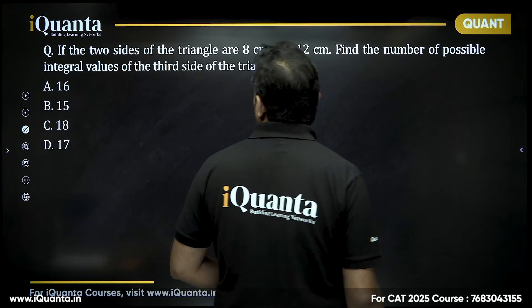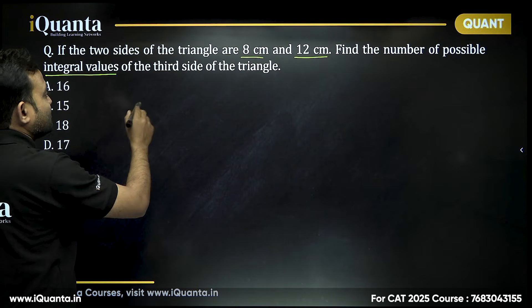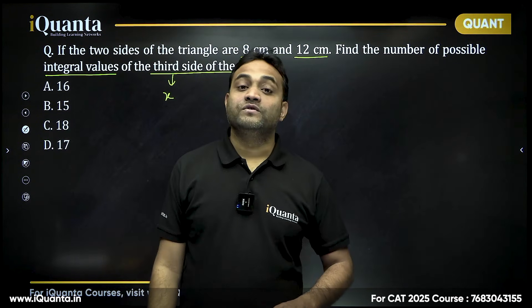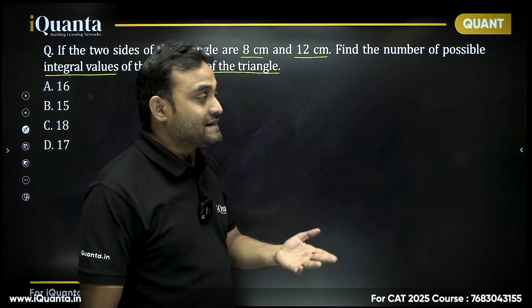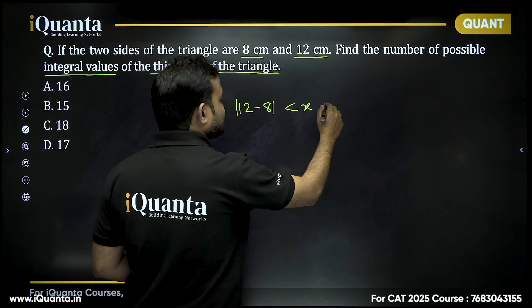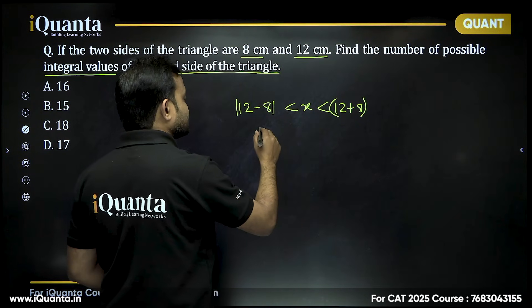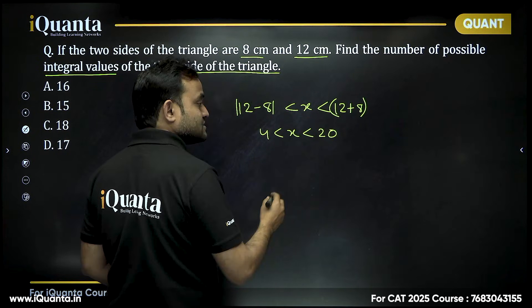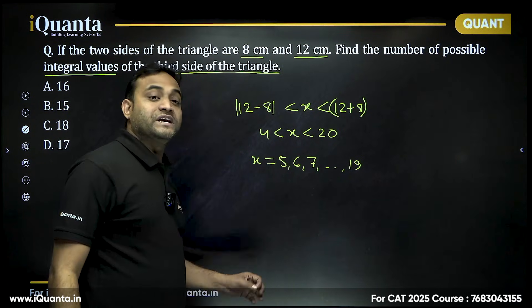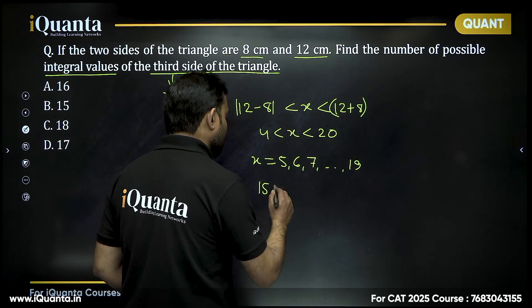Second question: If two sides of a triangle are 8 cm and 12 cm, find the number of possible integral values of the third side x. The third side must satisfy: |12−8| < x < 12+8, so 4 < x < 20. That means x can be 5, 6, 7, ... up to 19. From 5 to 19, there are 15 possible integral values.